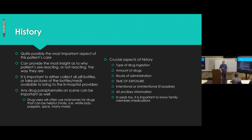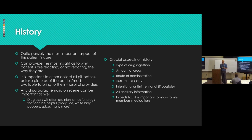As important as the physical exam is in toxicology, the history is probably the most important thing. Intentional overdoses generally require more prying. Non-intentional overdoses — like someone who did too much heroin — they'll often be honest with you after you give them naloxone and they wake up. The most important thing on scene is knowing what's available to the patient, especially in pediatric cases where kids can't tell you what they took or when they took it.